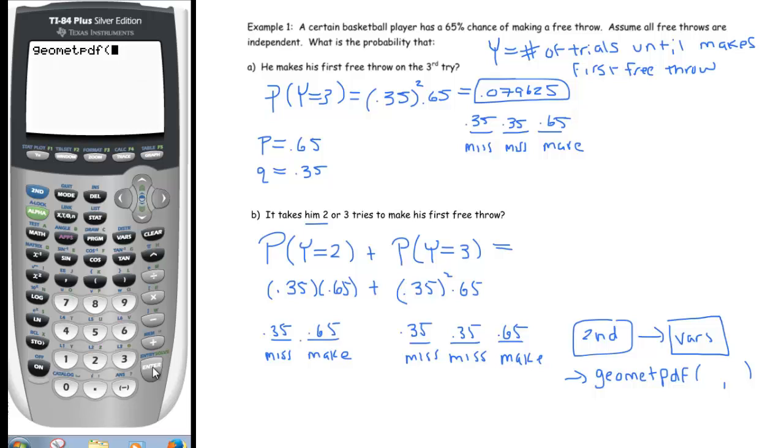That will give you the button for a geometric probability density function. What this requires is you to put in two things: the first is the probability, and the second is the number of trials you want to run.